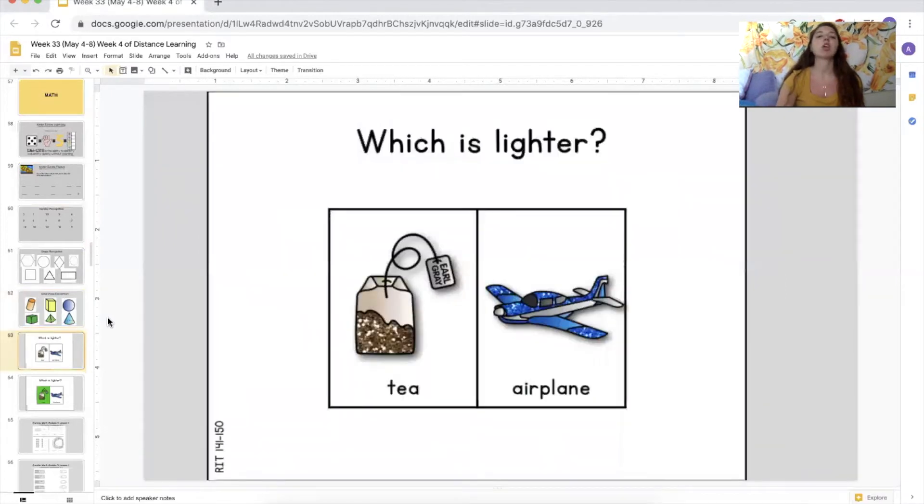Let's do a practice problem. Which is lighter? Now, lighter, remember, we did heavier and lighter. And remember when the heavier thing is on the scale or the balance, the heavier thing, does it go to the sky or does it go to the ground?